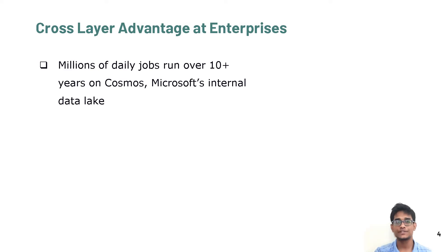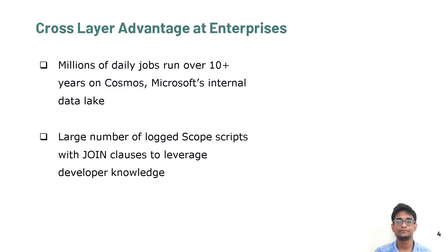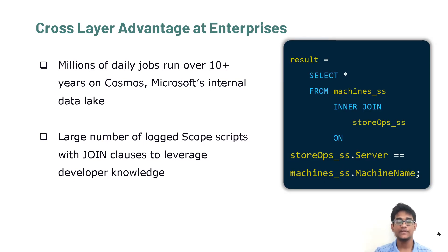We see millions of jobs run every day on Cosmos, which is an internal data lake at Microsoft. We have logged queries from these jobs run over the last decade. This enables us to parse join clauses from these scripts and use them as the collective knowledge of several developers and analysts who have worked with the data sets to understand the characteristics of related data. Consider this script written in scope, which is the querying language in Cosmos. We see that the column server in store upstream is joined with another column machine name in machine stream. We parse all such scripts to retrieve a list of column pairs that have been joined in the past.